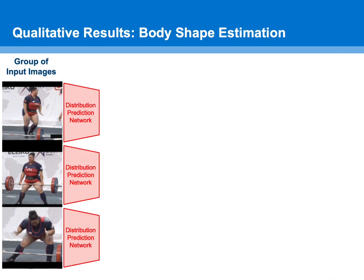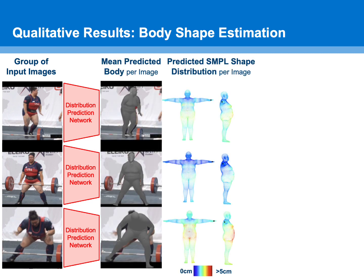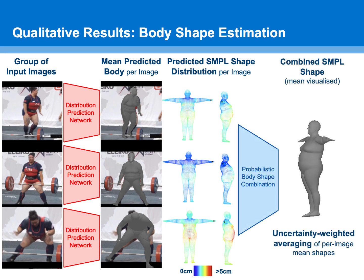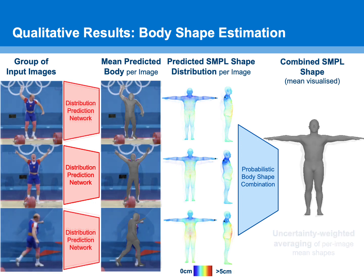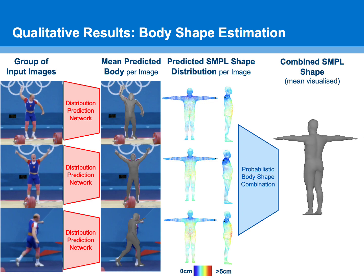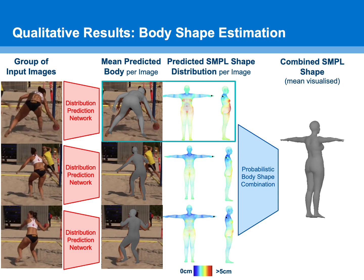When given a group of input images, the predicted SMPL shape distributions from each image are probabilistically combined into a final shape estimate, which amounts to uncertainty-weighted averaging. This results in a consistent body shape prediction which is more accurate than estimates obtained from single images. Predicted body shape uncertainties are larger when the subject's pose obscures their shape.